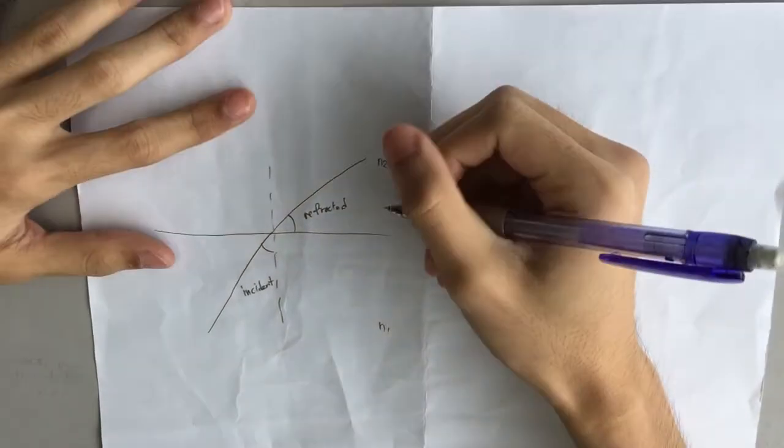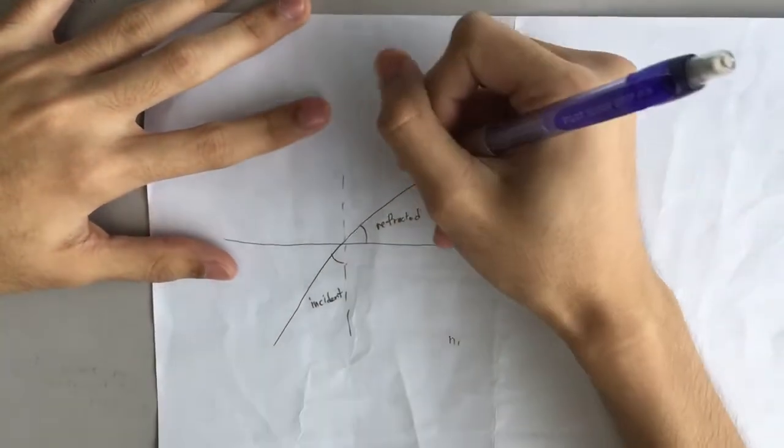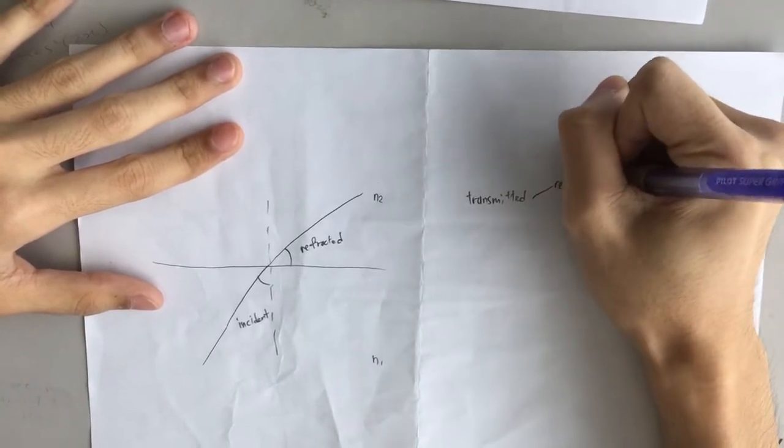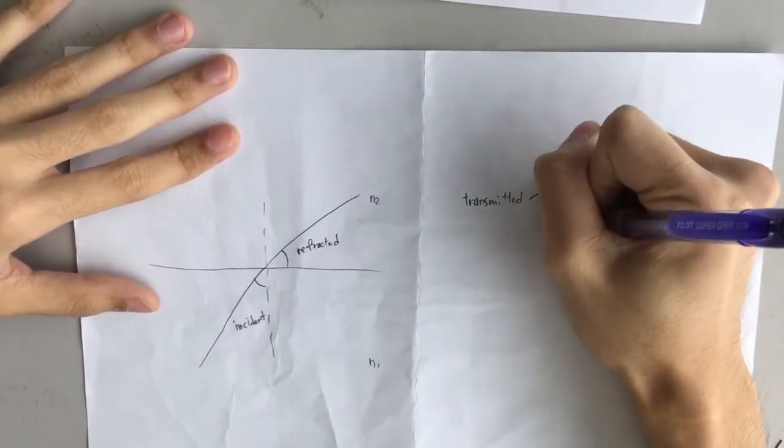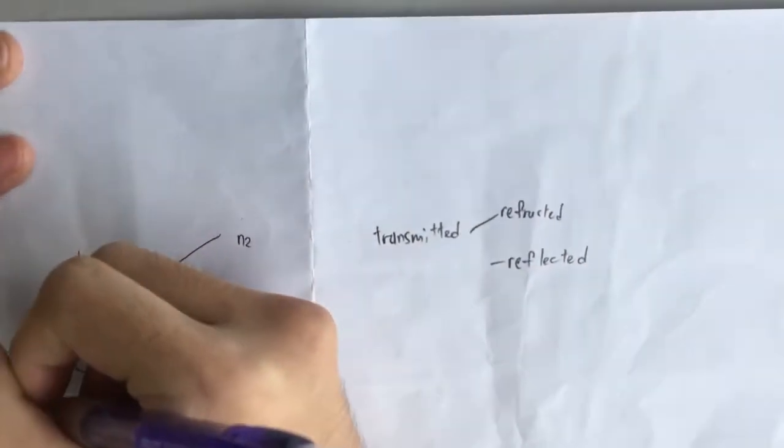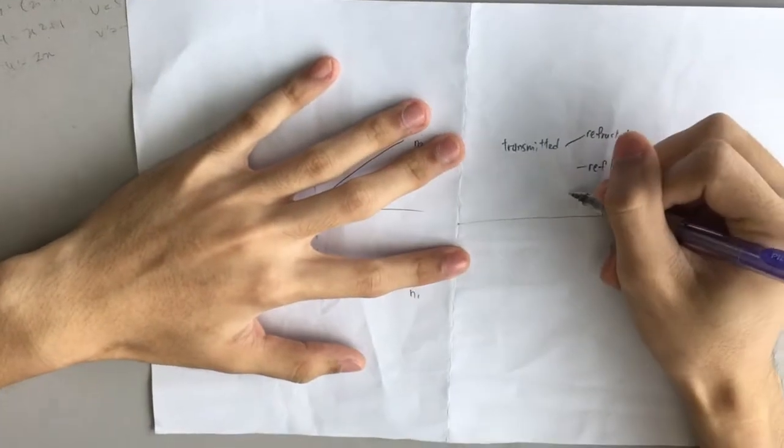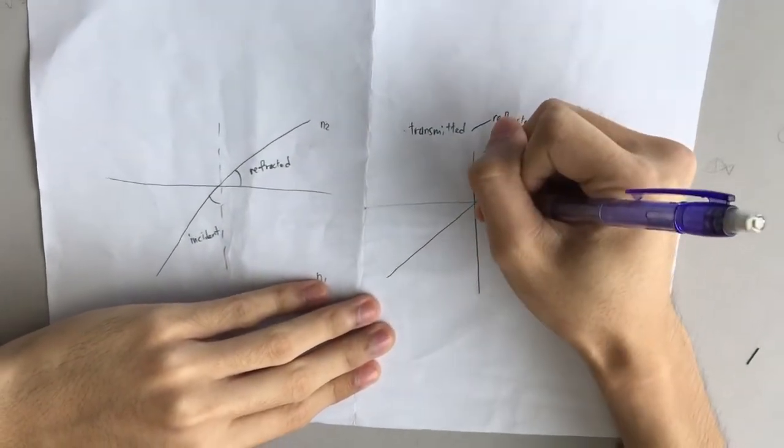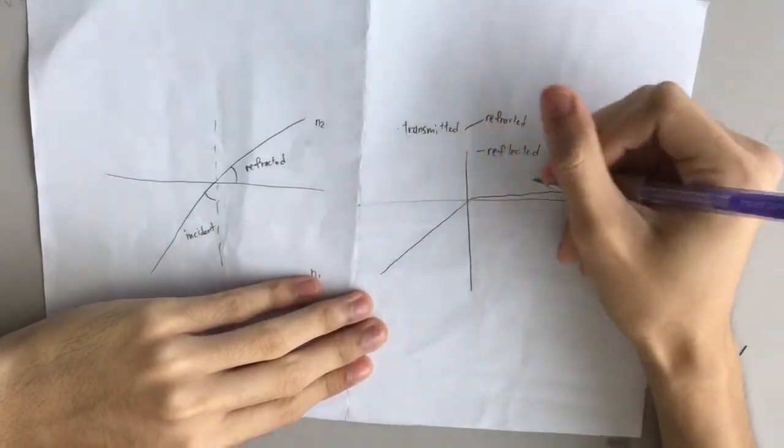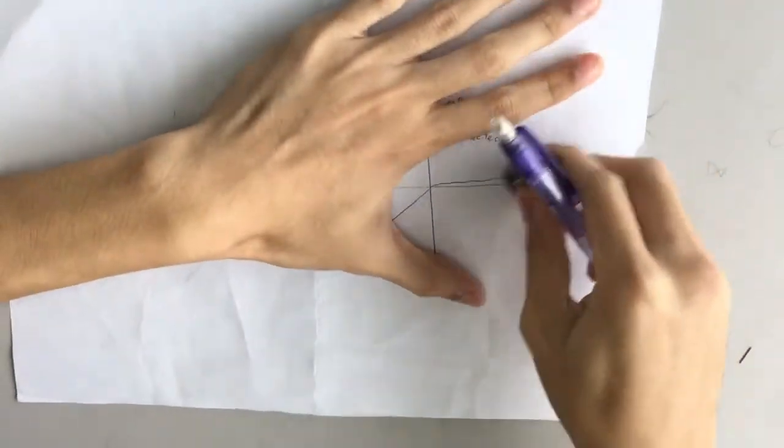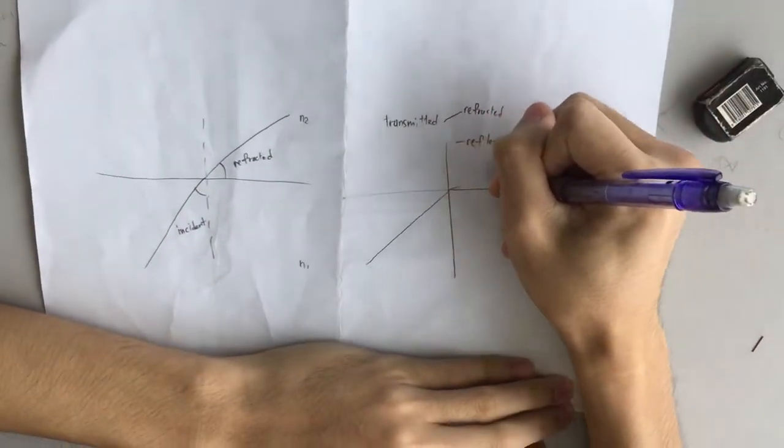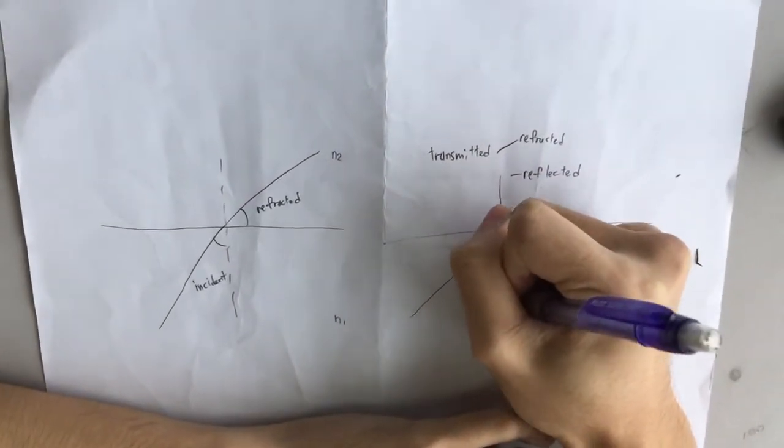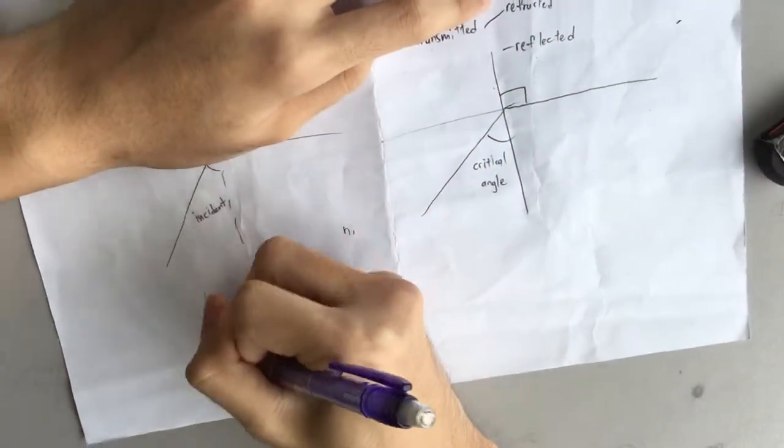The transmitted angle can be categorized, can be divided into either it's refracted or reflected. So when the incident angle is occurred at a point when the refracted angle is equal to 90 degrees, the incident angle is called the critical angle. When the refracted angle is equal to 90 degrees, this is what we call the critical angle.